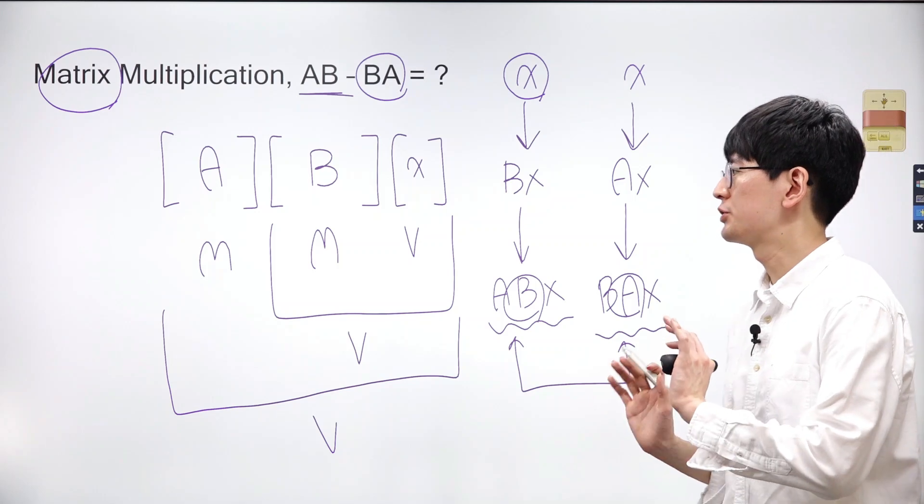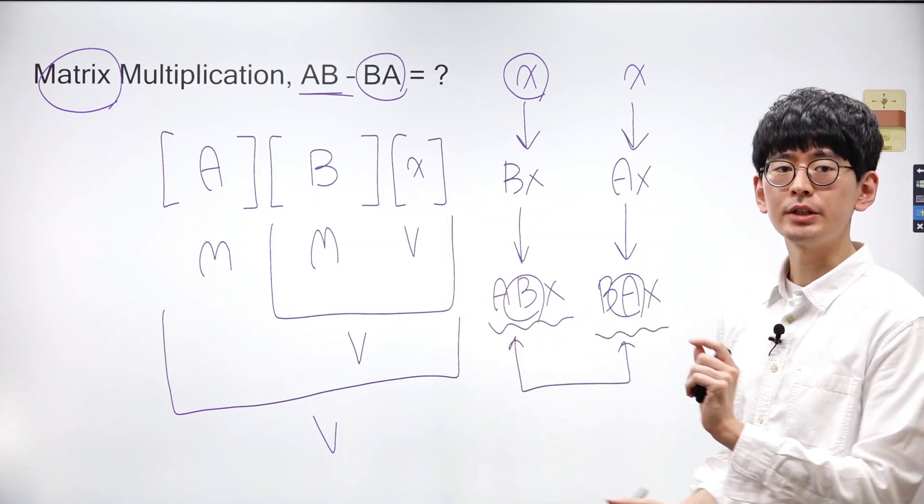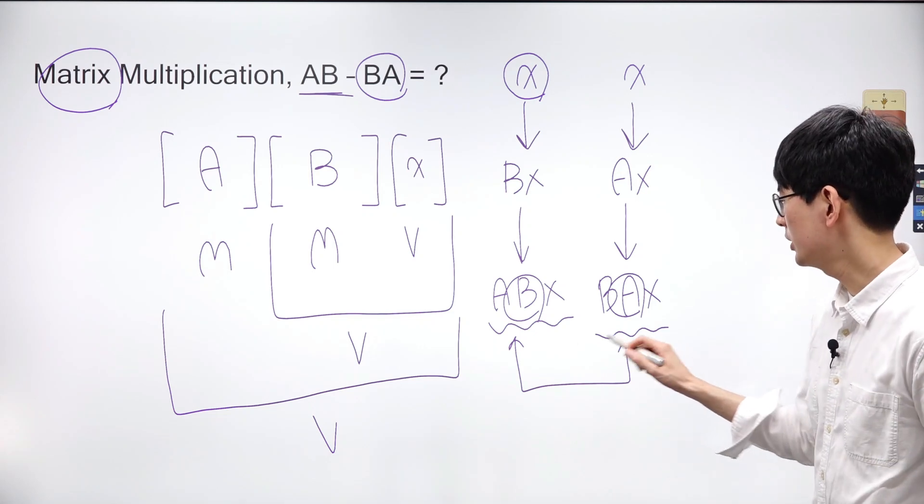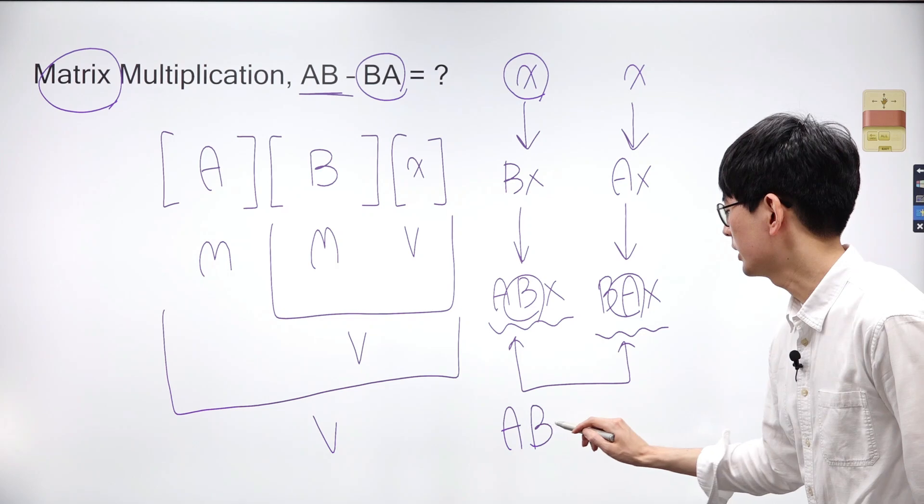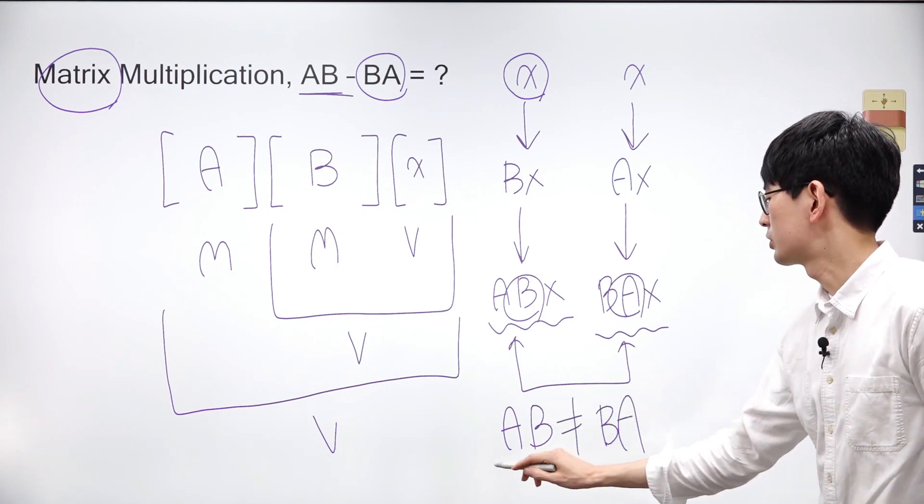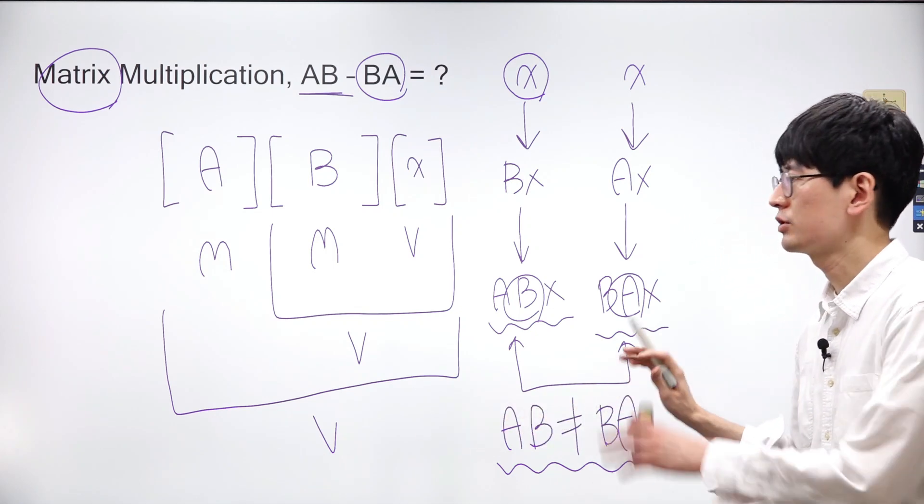For instance, rotating the coordinate space before flipping it could yield different coordinates compared to flipping it first and then rotating it. Once more, unlike general multiplication involving natural numbers, the order of matrices in matrix multiplication can yield different results.